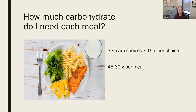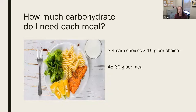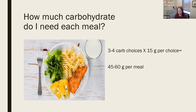One topic I always discuss with patients is carbohydrates — how much carbohydrate do they need at a meal? We're all very different and each of us will metabolize foods differently, which is why we ask for pre- and post-meal testing. In our diabetes guidelines, they recommend for females about 40 to 60 grams of carbohydrate per meal — three or four carb choices, where each carb choice is about 15 grams of carbohydrate. For men, the recommendations are usually 60 to 75 grams of carbohydrate per meal.